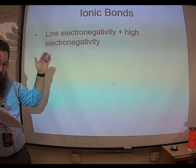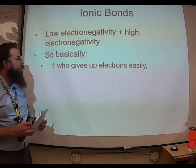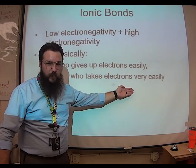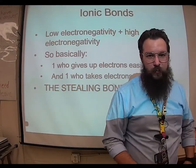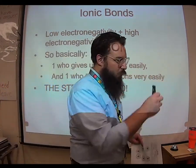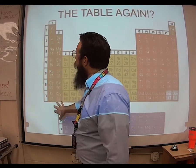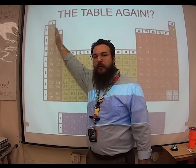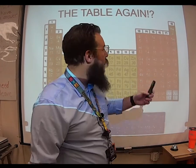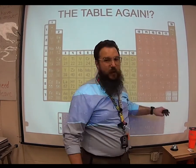Ionic bonds occur between atoms with very low and very high electronegativity. You don't even have to remember the word electronegativity until you take chemistry. Basically, one of them is going to give up electrons really easily, and the other one is going to take electrons very easily. I think of this as the stealing bond — someone walking down the street holding their wallet out, easy to grab, and then someone else just grabs it and sprints off. Atoms over here with one or two electrons in their outer shell will get together with elements over here that have six or seven valence electrons, because it's easier to gain one more electron than get rid of all seven.